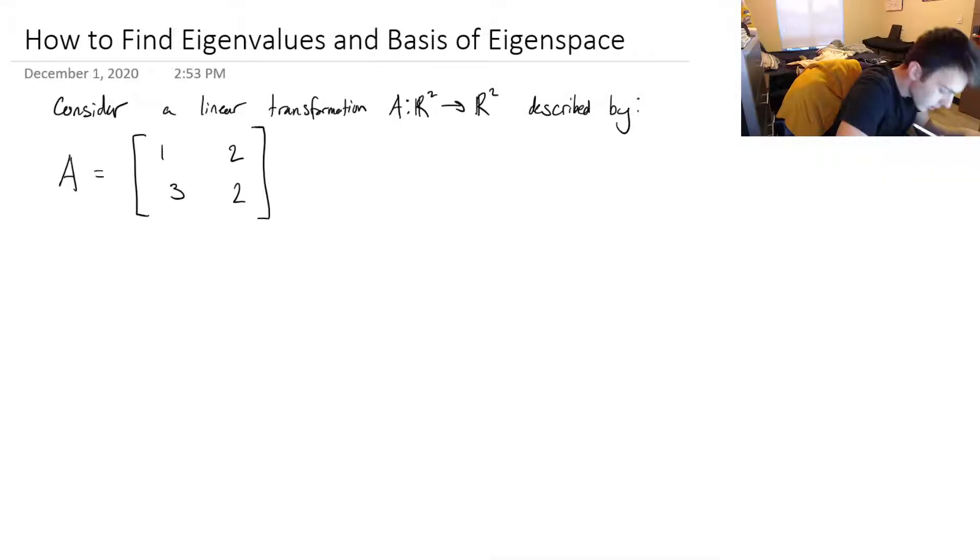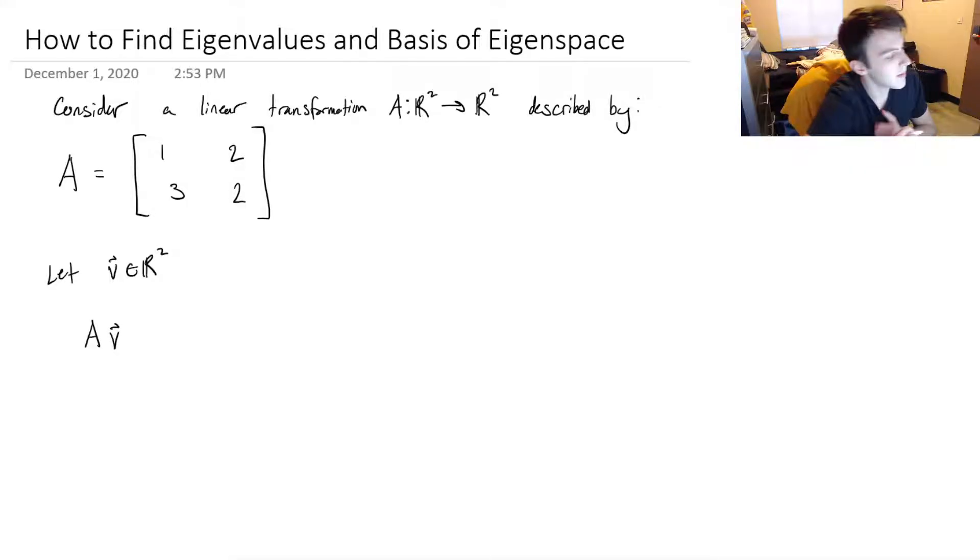So let's let v be some vector in R², and we're trying to find that vector v after we apply a linear transformation, which is the same thing as just taking that vector v, multiplying it by our matrix A - that's our linear transformation. We want this to be equal to some constant, which we'll call lambda, times the vector that we started with. That's exactly what we were saying in the first video.